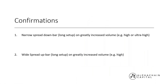Now we move on to confirmations. Once no demand or no supply signals have been identified in the market, we need to use a confirmation indicator that will give us some degree of confidence that the move we're expecting is about to begin. Although you may have identified your own confirmation indicators based on your own individual backtesting, here are two volume confirmations that could be used around areas of support and resistance. The first is looking for narrow spread down bars on greatly increased volume — high or ultra high. The second is a widespread up bar on greatly increased volume, looking for a high level on the volume indicator.